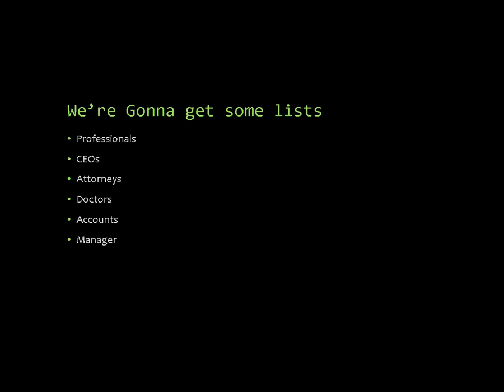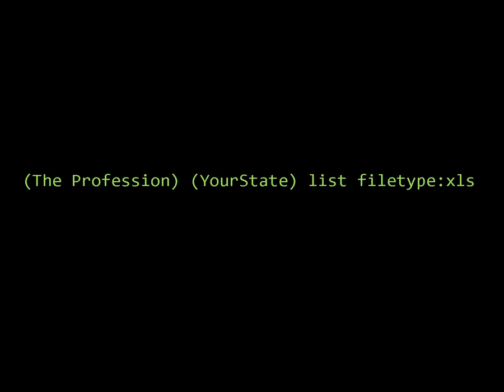I'm going to show you how we can get unlimited access to people like this on Google. There's a little secret formula you have to follow. It's pretty simple — just whatever profession you're looking for, then your state, then 'list filetype:xls'. XLS means Excel spreadsheet. You do have to have Excel. If you don't have Excel, go ahead and go to a library to get access to it. Pretty simple, and I'm going to show you an example.